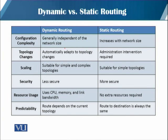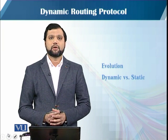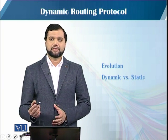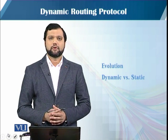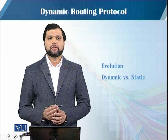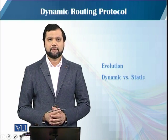Dynamic routing زیادہ resources use کرتی ہے جبکہ static routing کم resources use کرتی ہے۔ Predictability کے point of view سے dynamic routing میں route current topology پر depend کرتا ہے، جبکہ static routing میں route fixed ہوتا ہے اور administrator کو اس کا علم ہوتا ہے۔ خلاصہ یہ ہے کہ dynamic routing protocols کا evolution late 1980s میں ہوا، اور آج کے networks میں static اور dynamic دونوں routing use ہوتی ہیں۔